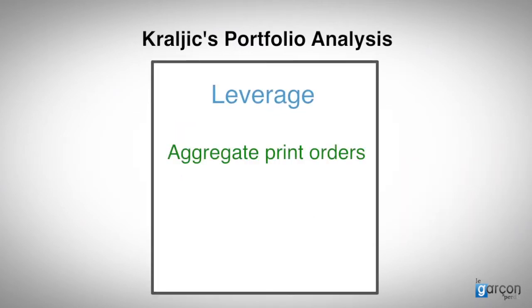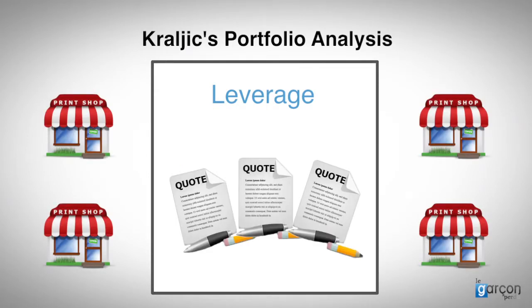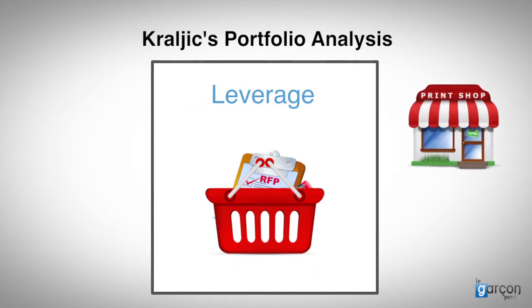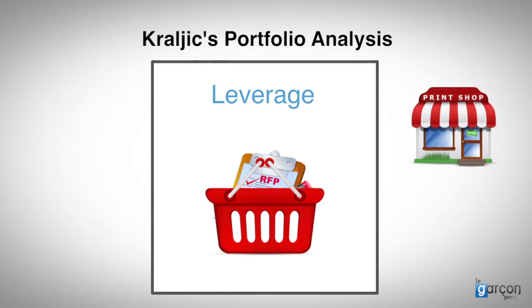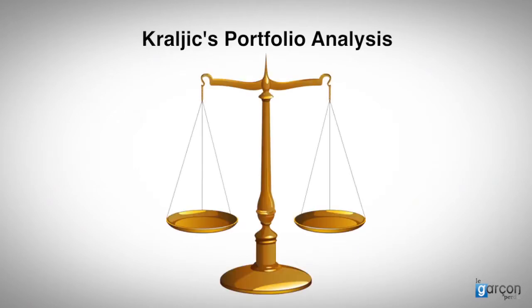This could be done by aggregating the print orders. Instead of Phil awarding every single job to a different printer after getting three quotes, he could have issued an RFP for a shopping basket of print jobs and awarded a contract to the bidder who offered the best value solution overall. The award of a period agreement for print would have freed up Phil's time to focus on other categories where he could make a greater impact. And of course, this strategy changes the balance of power in favour of the buyer, allowing the buyer to harvest more value from the market.